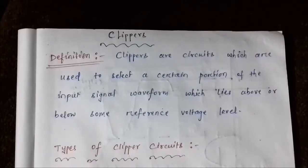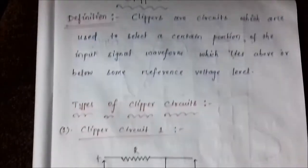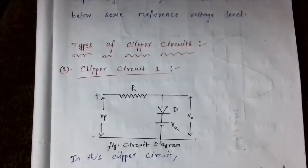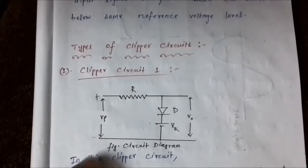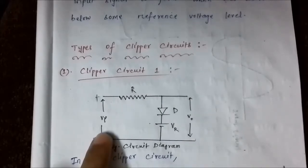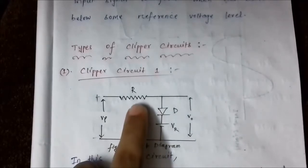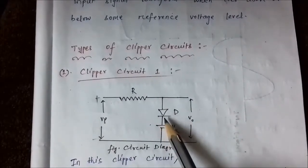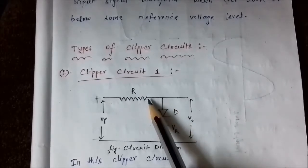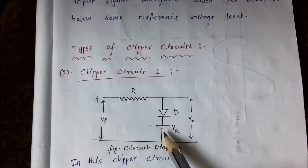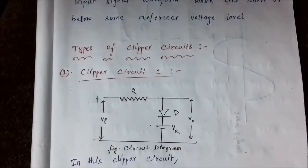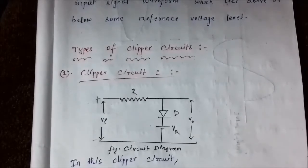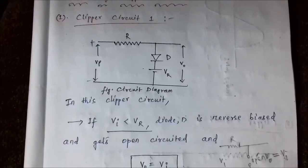There are various types of clipping circuits and we are going to discuss them one by one. Clipper circuit number one consists of the input AC signal waveform, a resistor R connected in series to the input voltage, and a diode D with its P-type end connected to one end of the resistor while its N-type end is connected to the reference voltage V_R. The output voltage is taken from the two output terminals.